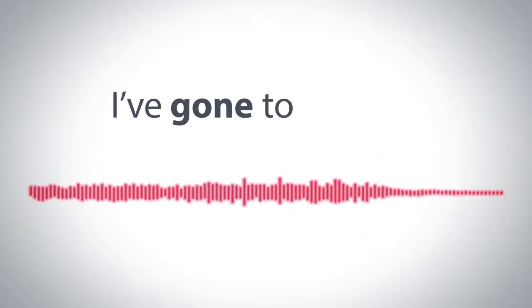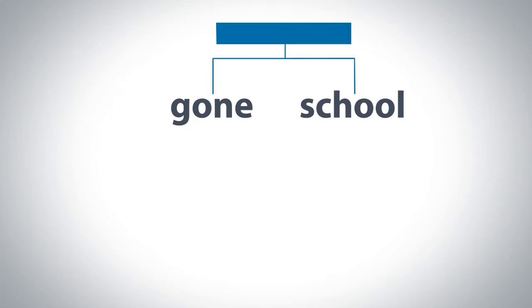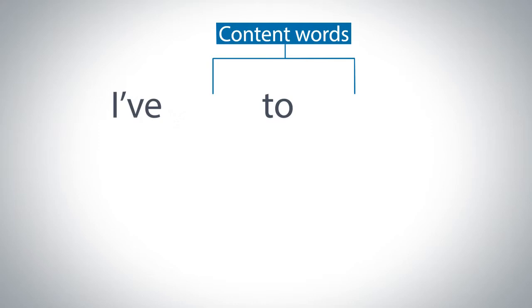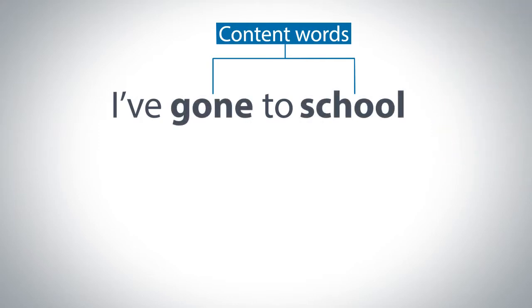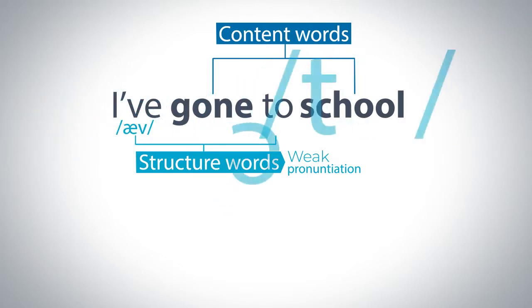Look at the following example: 'I've gone to school.' If we take out the structure words, you can probably still guess the meaning. However, if you take out the content words, you won't be able to figure out the meaning. You'll find that these structure words are therefore weak in the pronunciation. For example, 'I've' is pronounced 'avv' and 'to' is pronounced 'tuh'.